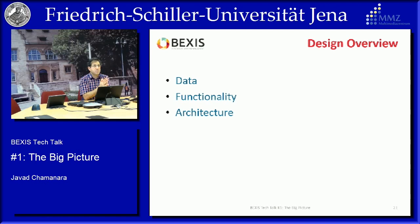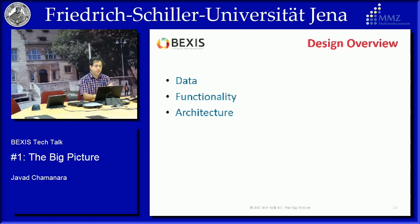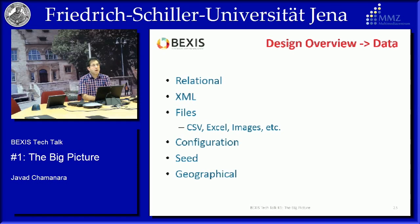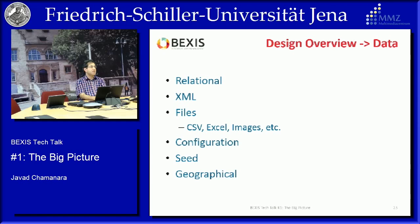Switching to the design view: we have three main elements — the data itself, the functionality we provide, and the architecture that accommodates functionality and data management in a robust and extensible way. From the requirements and packages described, it's clear we are dealing with a complex data structure consisting of relational data for tuples, people, organizations, and so on; XML data for hierarchical or dynamic data structures; files for data submissions in any format such as logger machines, Excel, or satellite images; and internal configuration files for system and module behavior.